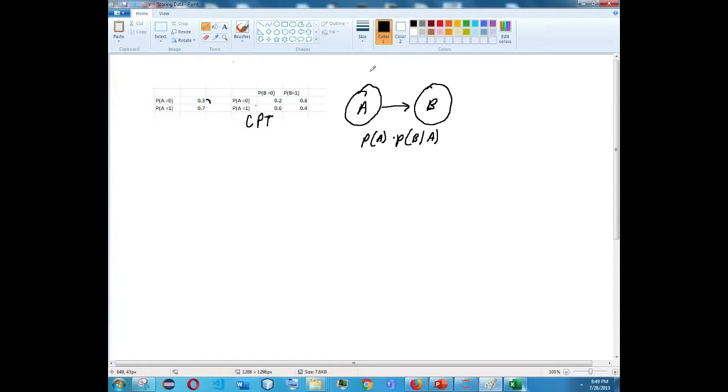If we had a third variable in this joint distribution, we would then have, for example, if it was a C and it pointed to B, then you would have two parents of B. So we talked about this last time in the video. In this video we're going to talk about how we store these values, how you store this in code.